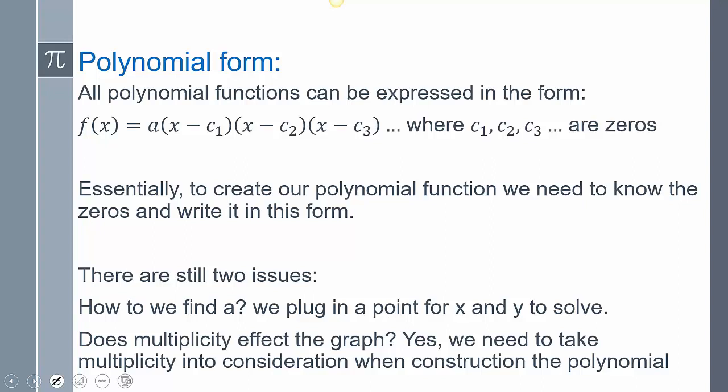Now, we can express a polynomial in this form. This is an important form to realize. There could be some coefficient A, and then the rest are all of these linear factors: X minus where it crosses, X minus where it crosses, X minus where it crosses. To create our polynomial, we're going to have to start with this form. We don't have to eventually multiply everything through. Leaving it in that factored form is okay.